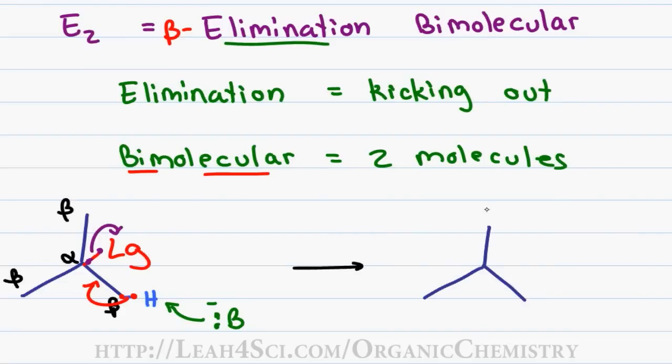And for the product, we show the two electrons that used to attach the beta hydrogen to the carbon sitting between the alpha and beta carbon as a pi bond, and the leaving group completely gone from the molecule.